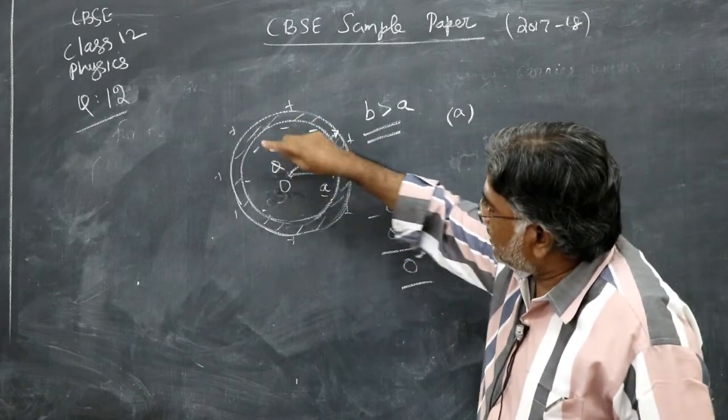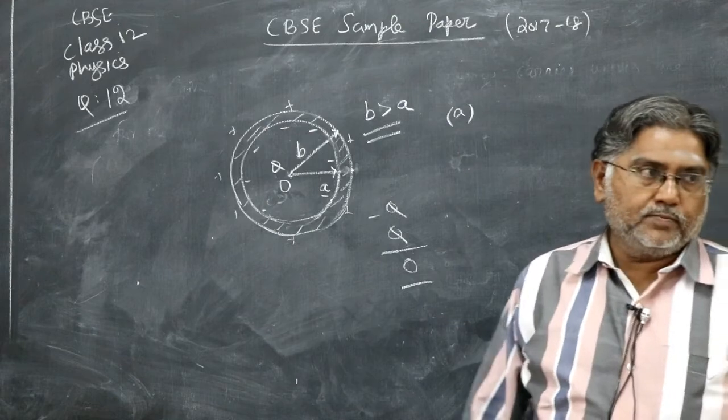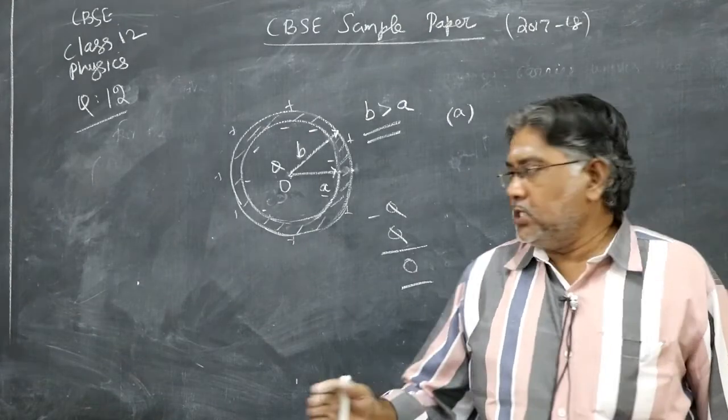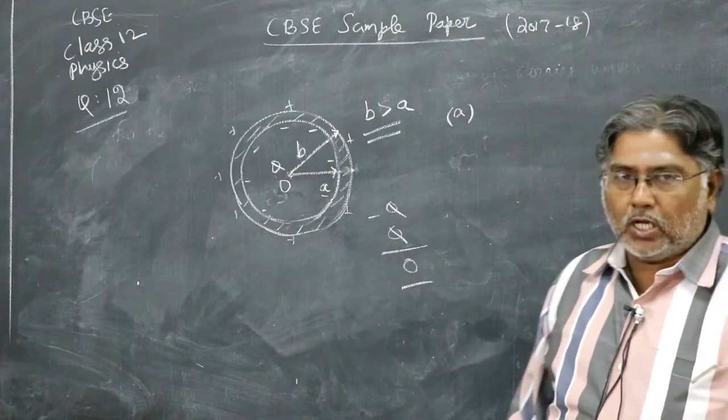Minus Q has come to the inner surface. So plus Q will go to the outer surface. Therefore, total charge would be zero. So this is how the charges are induced.